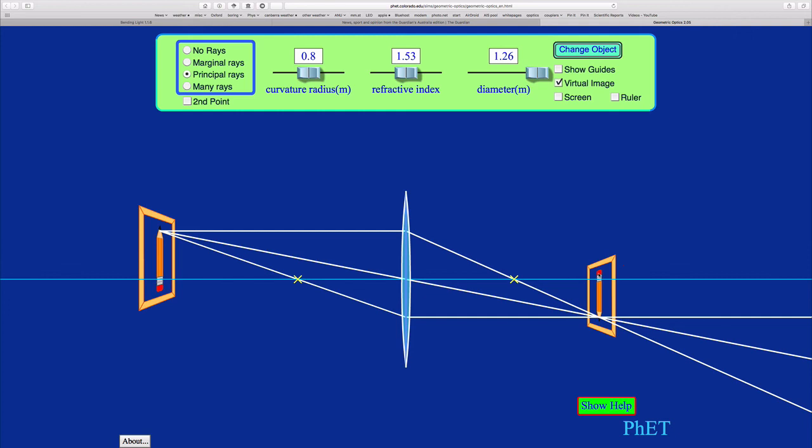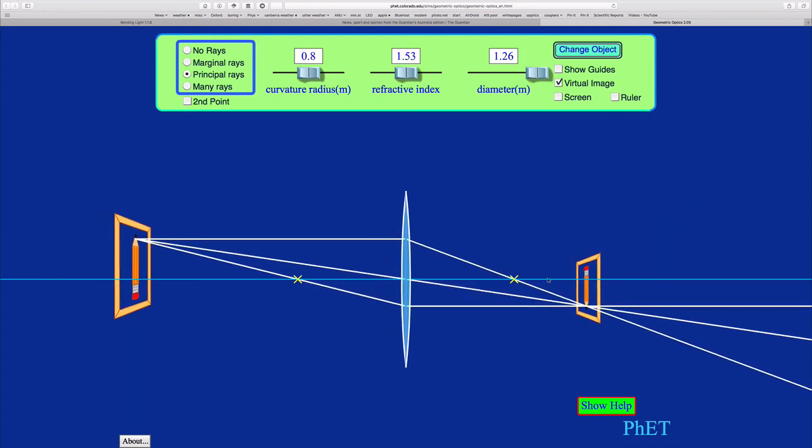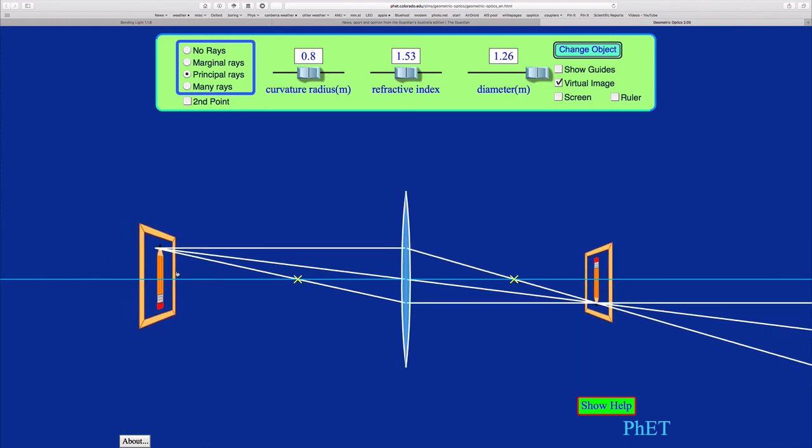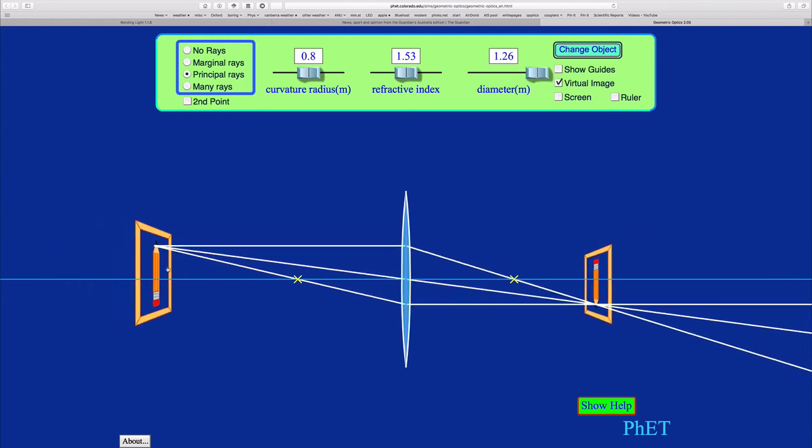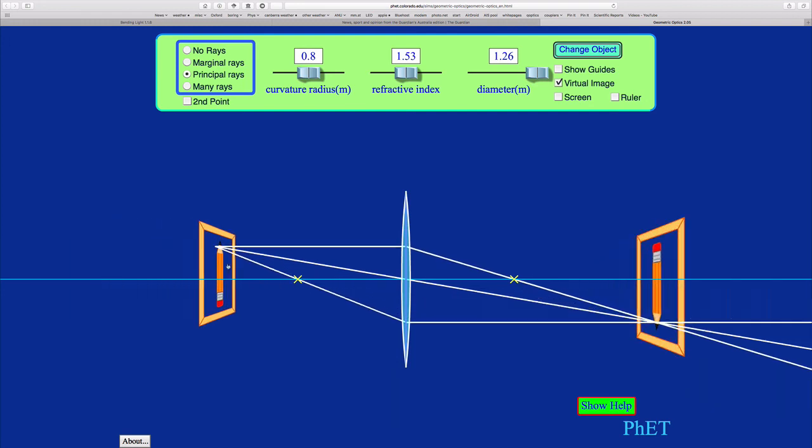And that's a geometric way of constructing where the image plane is going to be. If I give you a lens with a particular focal length, you draw the lens, you draw the focal points at either side. And then depending on the distance of the object, you get an image formed over here. And you can see that the image changes size depending on where this object is relative to the focal point of the lens.